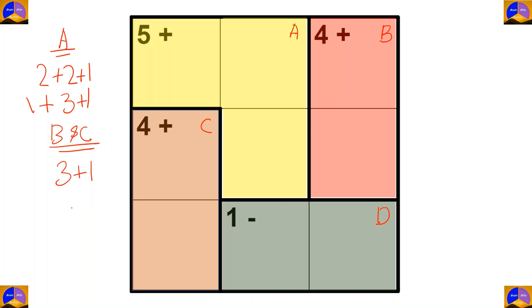For cage D there are 2 cells and the operation is minus. After subtracting it, our result must be 1. So, there are 2 options, 3 minus 2 and 2 minus 1.